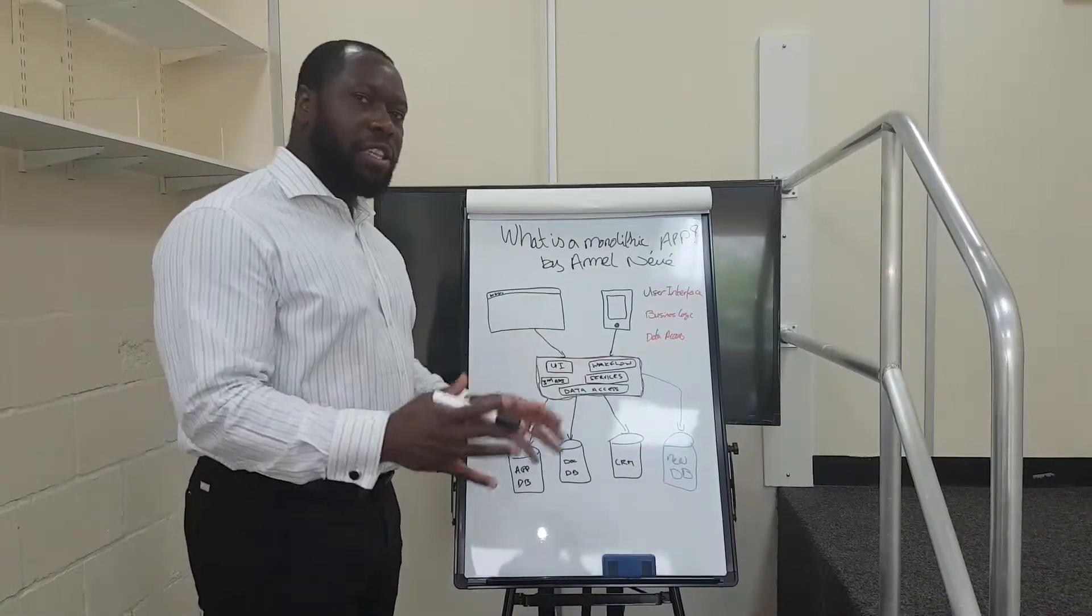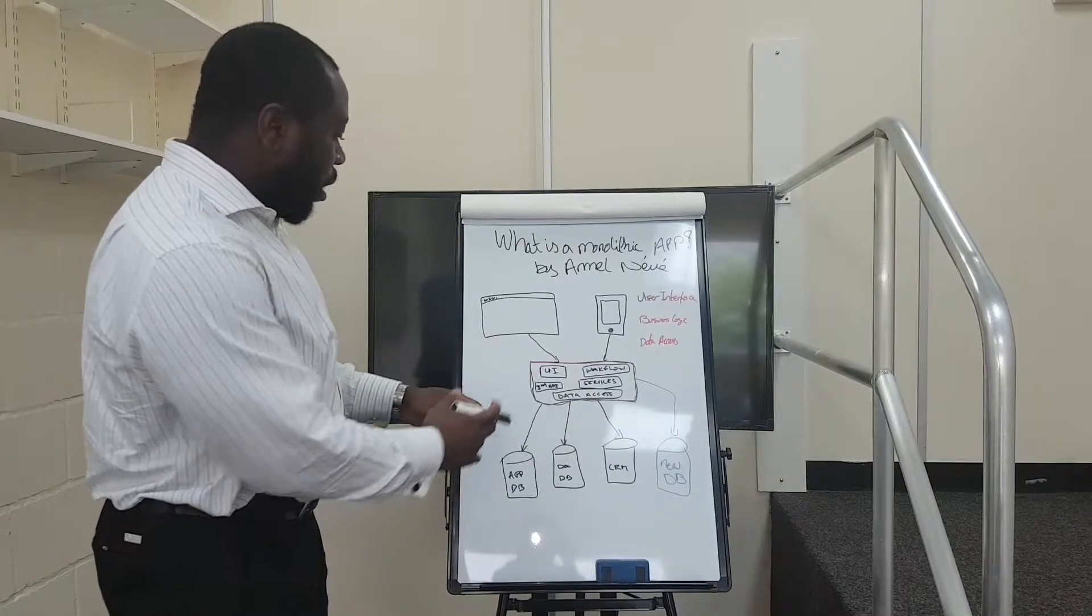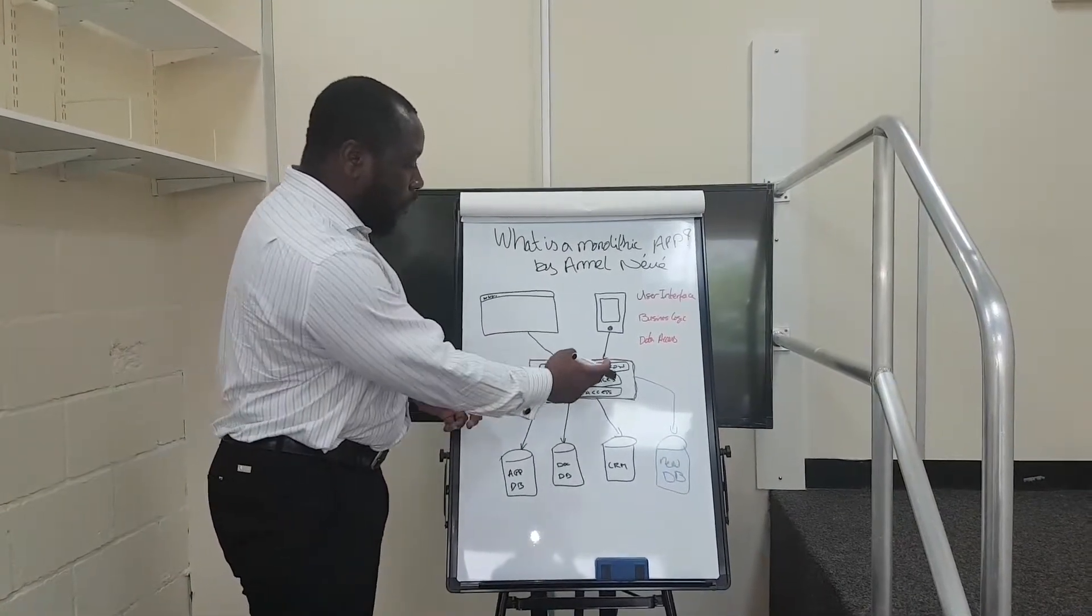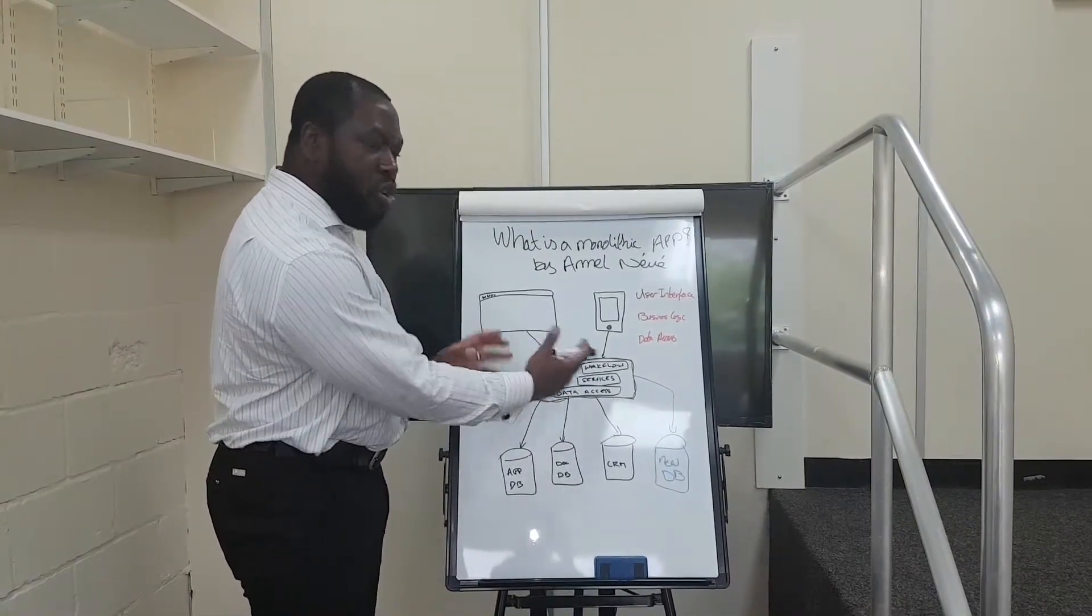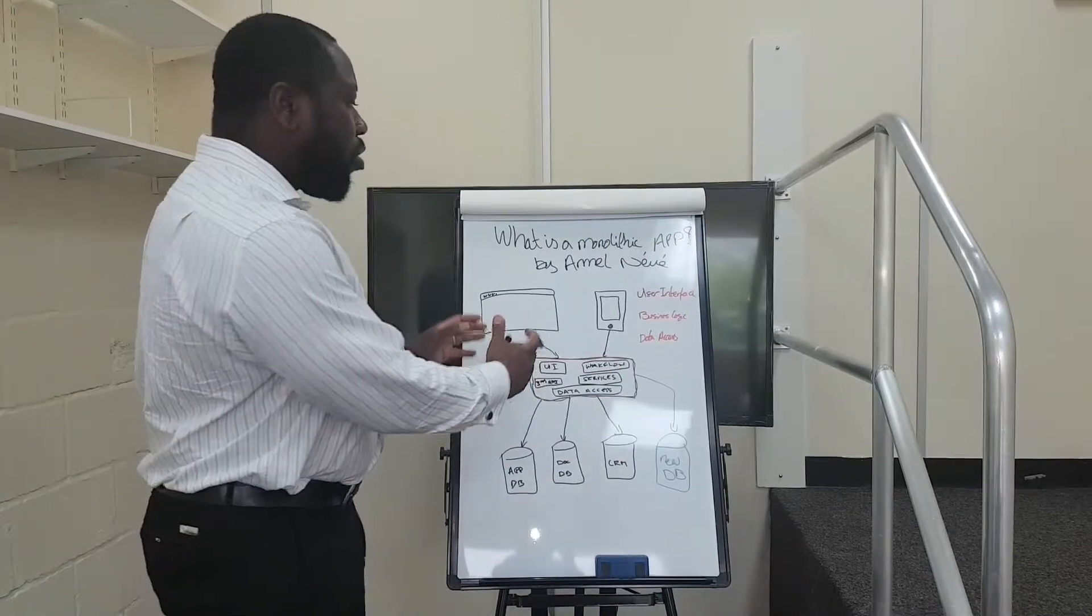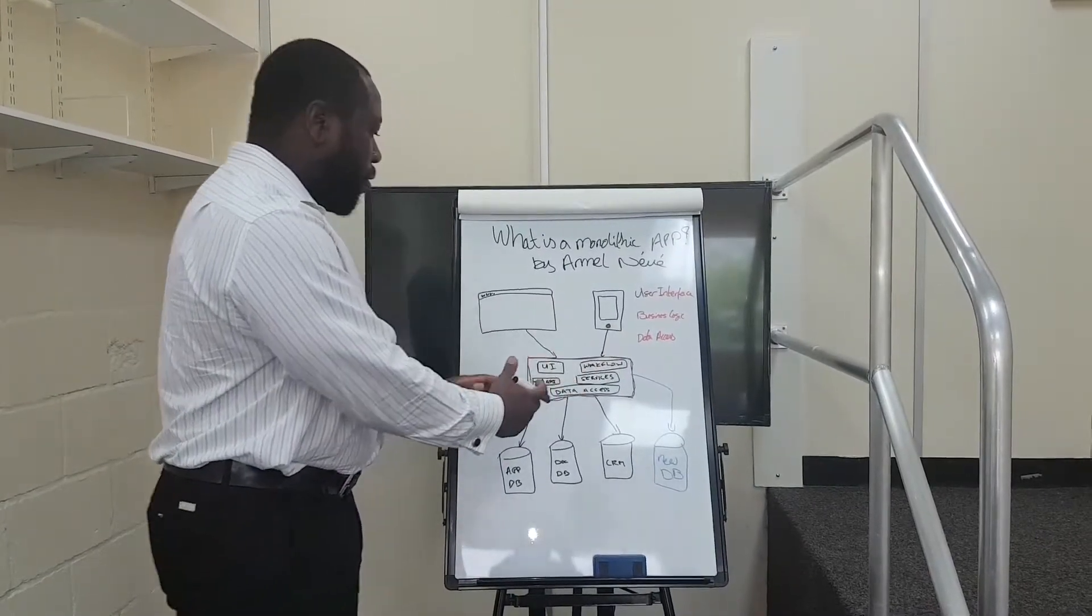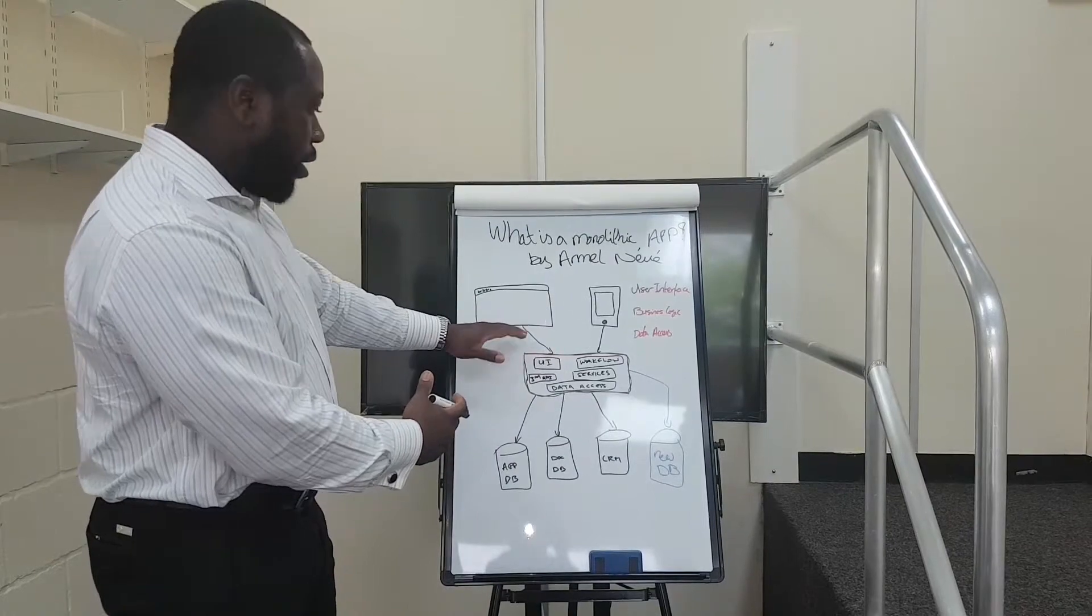In a monolithic architecture, as you can see here, the user interface, the workflow, the services, the data access layer are all part of the single code. There is no clear separation of the user interface, as an example.